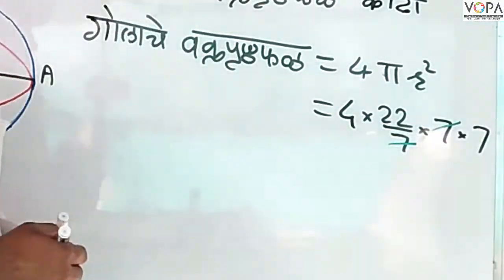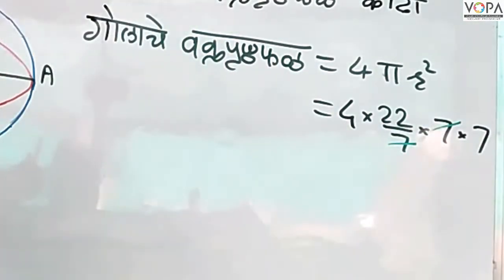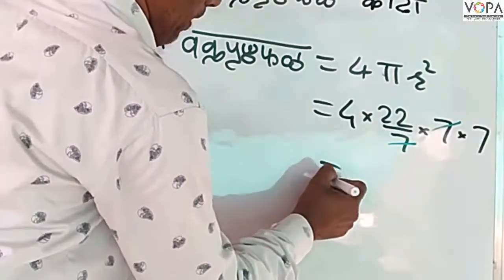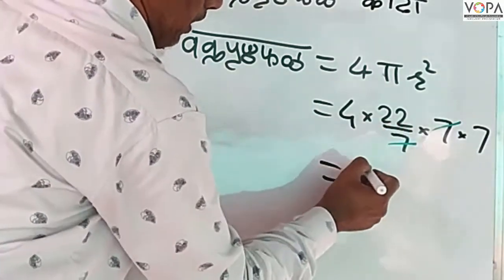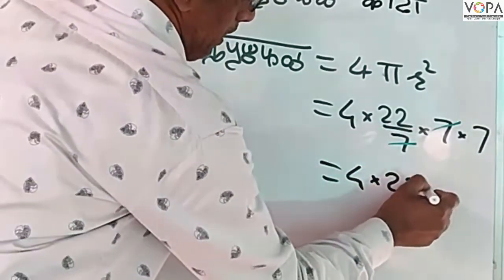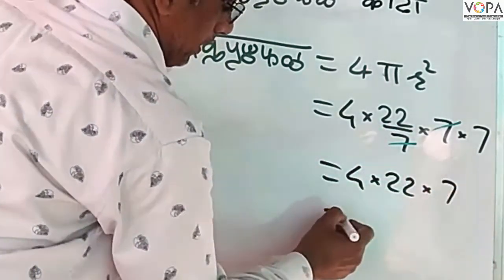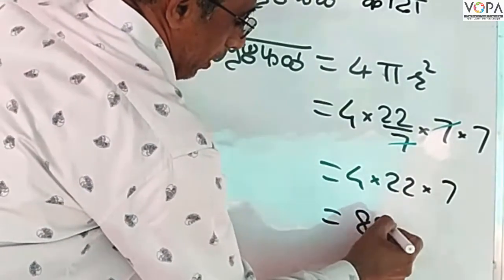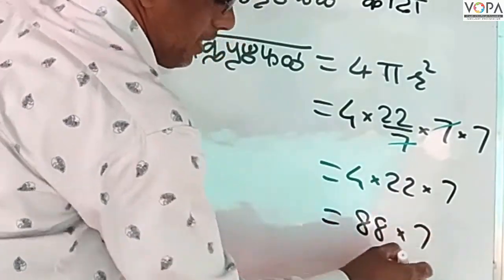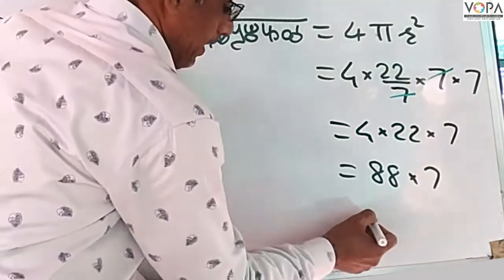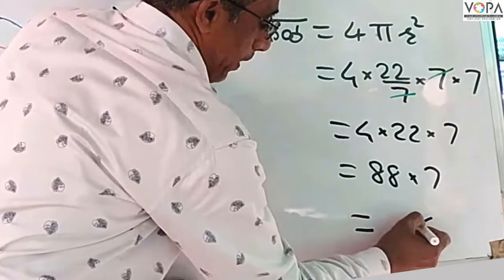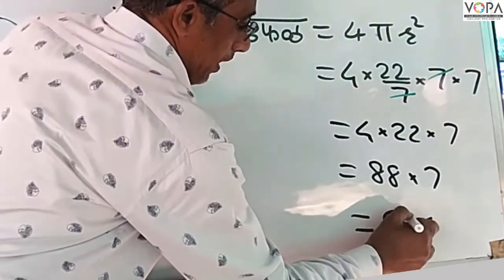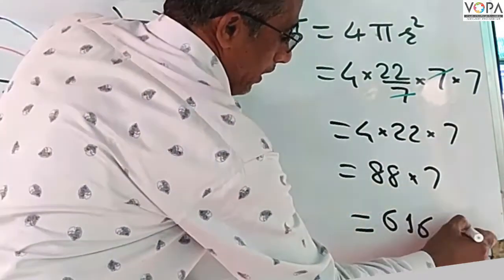We have to cancel this. Then we will not die. We have to take this. We will take this. It is only 6-6 cm.